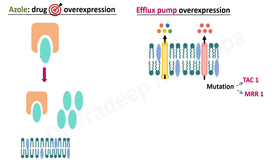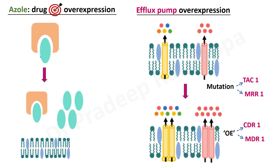There is also a mechanism called efflux pump overexpression. Most trainees would have heard of resistance to drugs happening through efflux pumps, like with antibiotics, where efflux pumps throw out the antibiotic. Similarly, with antifungal agents and azole resistance, there is efflux pump overexpression. Mutations have been found in TAC1 and MRR1, which basically cause overexpression of these efflux pumps. When there is overexpression of the efflux pumps, the antifungal agents are pumped out, they become ineffective, and resistance develops. Overexpression happens in two components: CDR1 and MDR1.